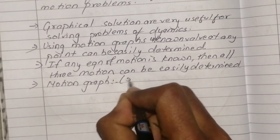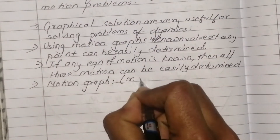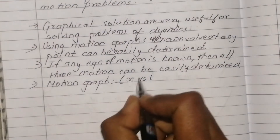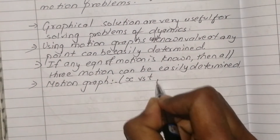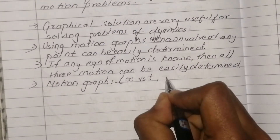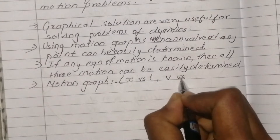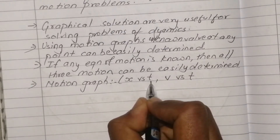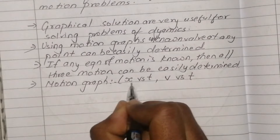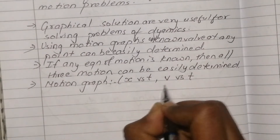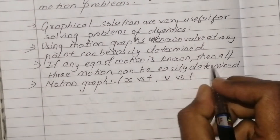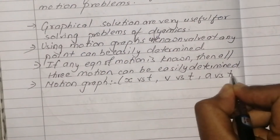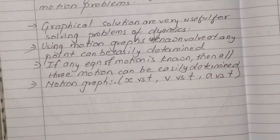The graphs related to motion include: position versus time, velocity versus time, and acceleration versus time graphs. These are the ordinary motion graphs we will be working with.